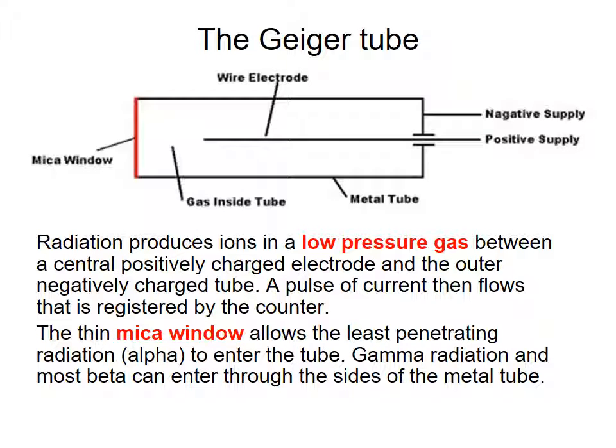So this thin micro-window right at the front here allows the least penetrating radiation, which we know is alpha because they're so heavy, to enter the tube. And gamma radiation and most beta can enter through also the sides of the tubes, even on the side.